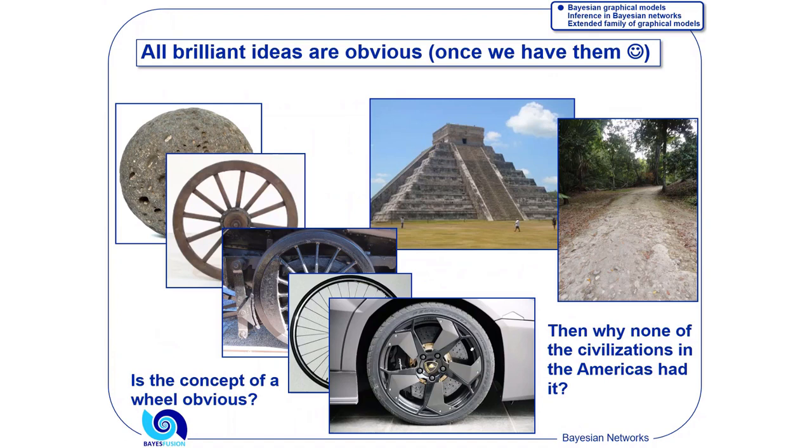But if it's an obvious idea, then why none of the civilizations in the Americas had the wheel? Incas were running on the mountain slopes, hard to get a wheel there. But in case of Mayans on Yucatan, this is a pyramid in Chichen Itza, and this is an old Mayan road. They had roads even, and they were carrying loads on their backs on these roads. So they didn't have the concept of a wheel.